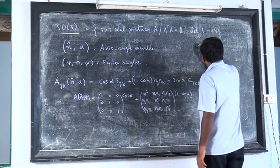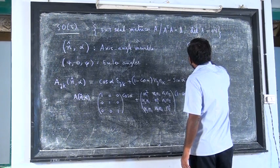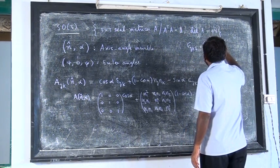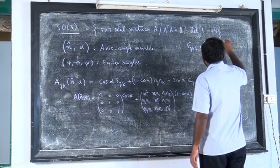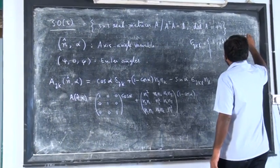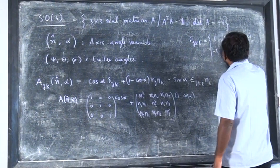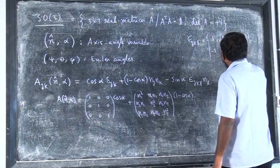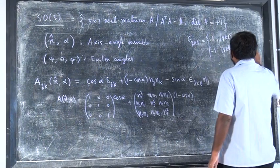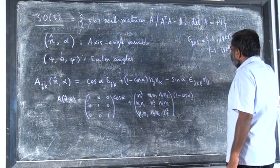The epsilon_jkl is the Levi-Civita symbol, equal to +1 if j, k, l are 1, 2, 3 or cyclic combinations (even permutations), and minus 1 if j, k, l are 2, 1, 3 or its cyclic combinations (odd permutations).